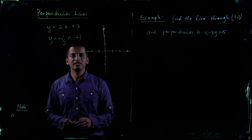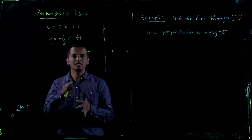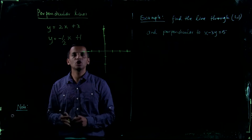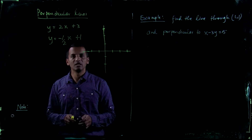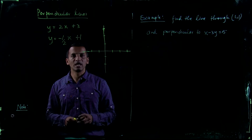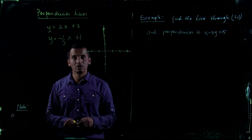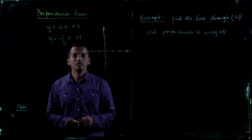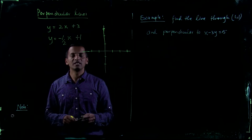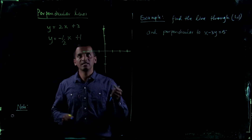Similar to parallel lines, you will see a relationship between the slopes when two lines are perpendicular. If two lines are parallel, their slopes are equal. But what happens when two lines are perpendicular? Let's see.